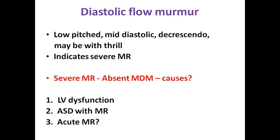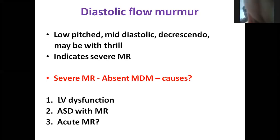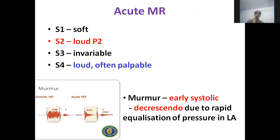Pre-systolic accentuation is not a feature of MR. If there is pre-systolic accentuation with loud S1 and opening snap, consider associated mitral stenosis. If a patient has severe MR but there is no flow murmur, the most important cause is LV dysfunction. In ASD with MR, most blood goes toward the right atrium through the atrial septal defect, reducing flow across the mitral valve — so you don't get a mid-diastolic murmur. In acute MR, S1 is soft, P2 is loud, and S3/S4 may be present; the murmur is only early systolic due to rapid equalization of LA pressure.